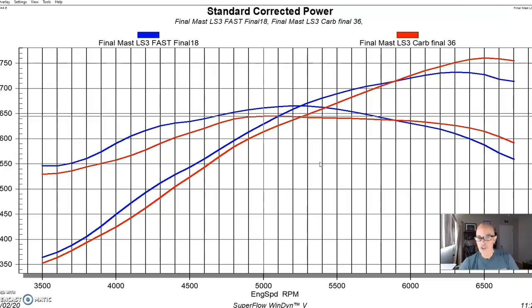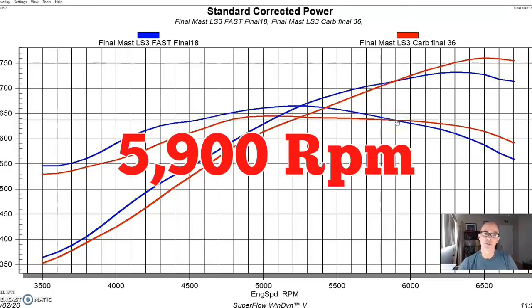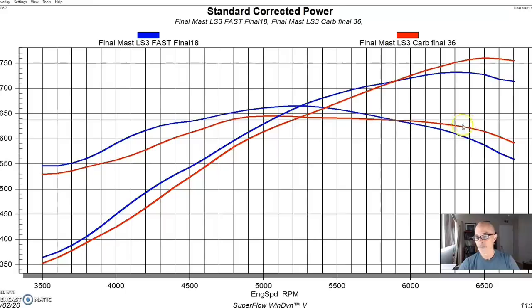And as you can see, like we saw with the smaller 6.2 liter, the long-runner Fast intake made more power than the short-runner single-plane intake. Although now, on the bigger displacement motor, the crossover was shifted down a little bit. Now the crossover was at 5900 RPM. If you remember on our 6.2 liter, it was at 6350. So we had shifted it 400 RPM or so just from the increase in displacement.